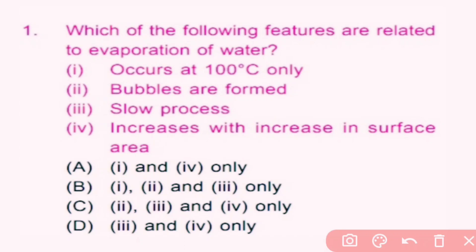Water does not evaporate only when it is heated to 100 degree Celsius. Evaporation is a surface phenomenon and occurs at almost all temperatures. However, increase in temperature increases the rate of evaporation, and increase in surface area also increases the rate of evaporation. It is a slow process. So option one is incorrect, option two is incorrect, option three is correct, and option four is correct. So option D is correct.